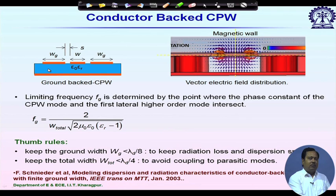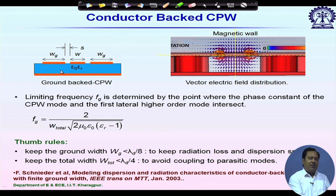One problem in ground-backed CPW is surface wave generation. We may have TE waves as already discussed, and since we have microstrip line mode, we may also have TM waves. Additionally, if w_g is too wide, we may also have parallel plate modes. All three types of surface waves can be generated, making the line very lossy. We can avoid surface waves to some extent by using periodic vias.